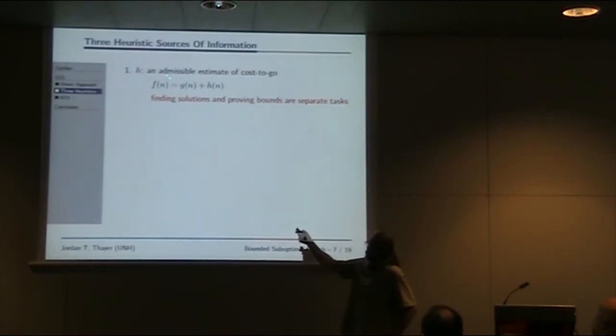To construct best d-hat, we need three separate sources of information. The first is h, an admissible estimate of cost. For people who've seen heuristic search before, you've seen this estimate. It's used by IDA star. We use this estimate to produce a lower bound of total cost to a node. f(n) = g(n) + h(n), exactly the evaluation function of A-star and IDA star. We rely on this quantity to prove our bounds.